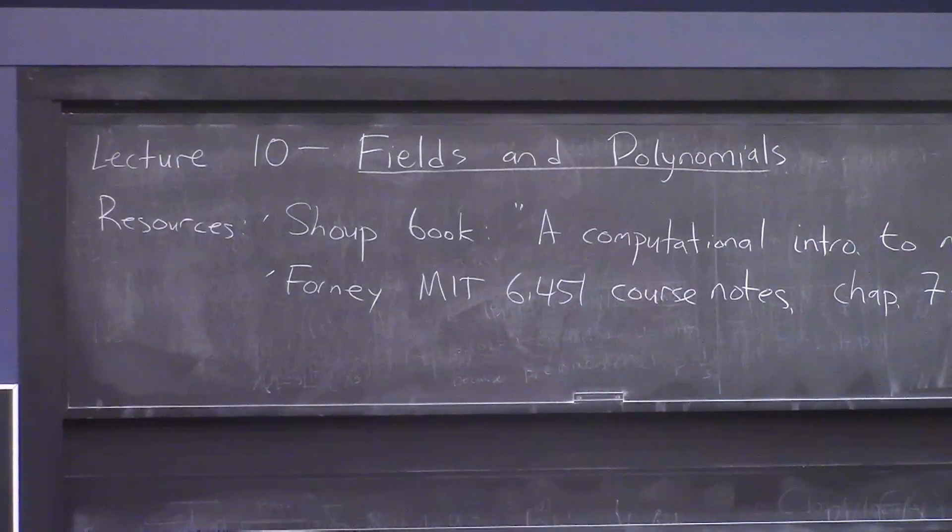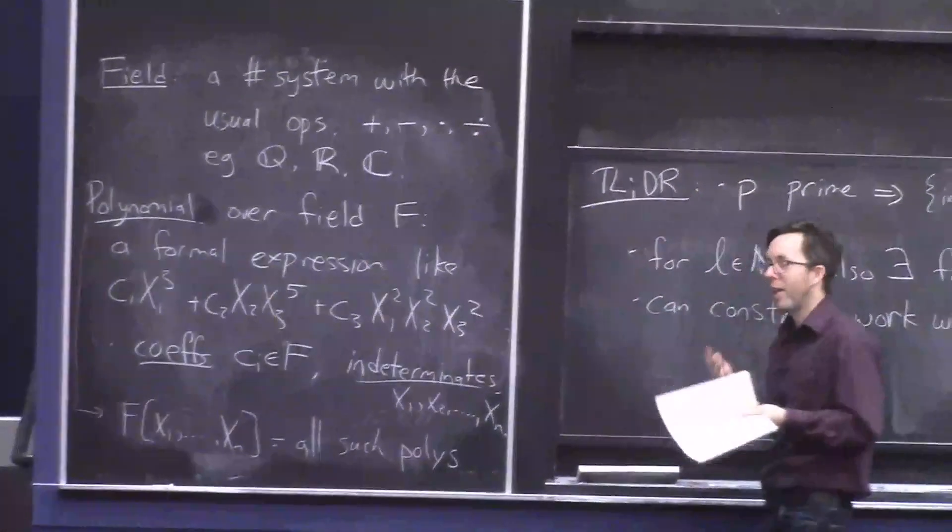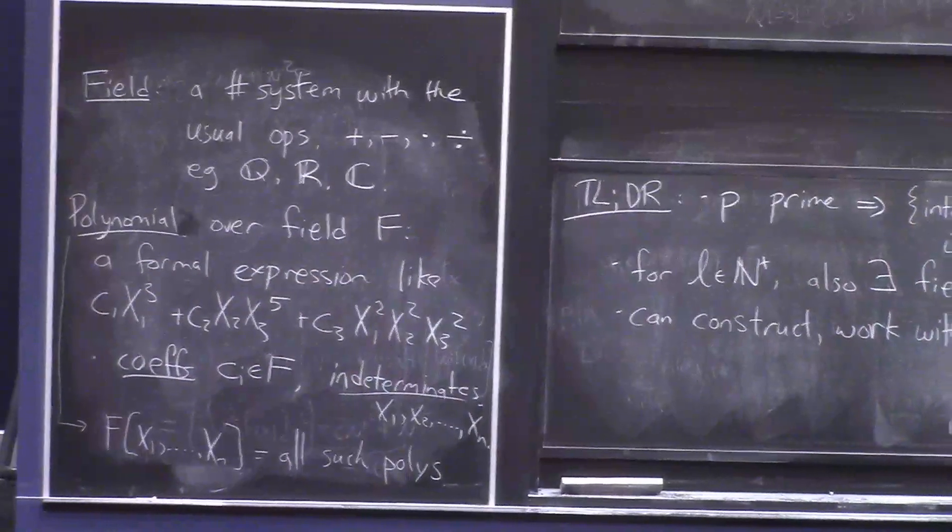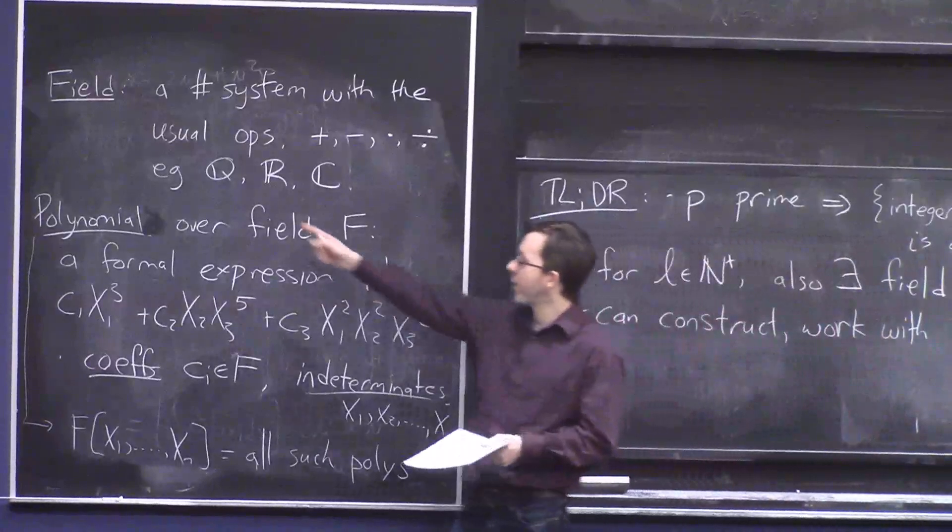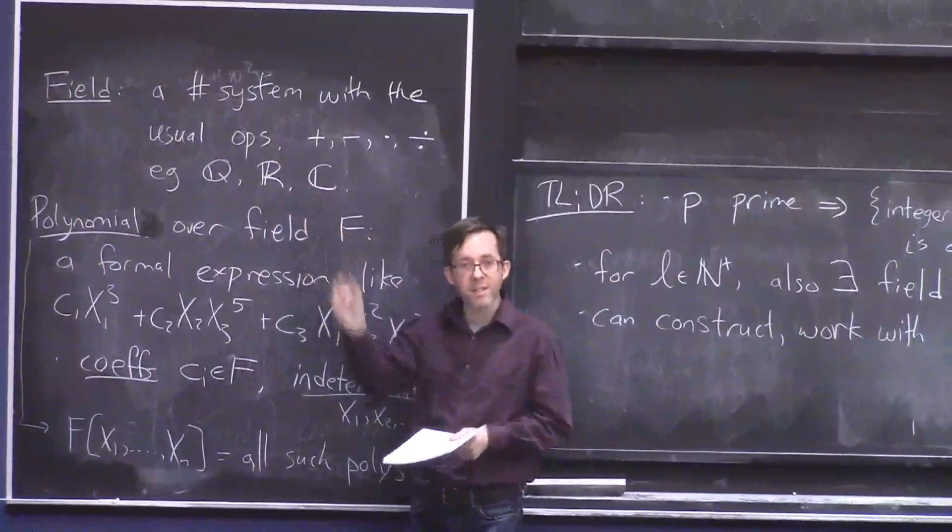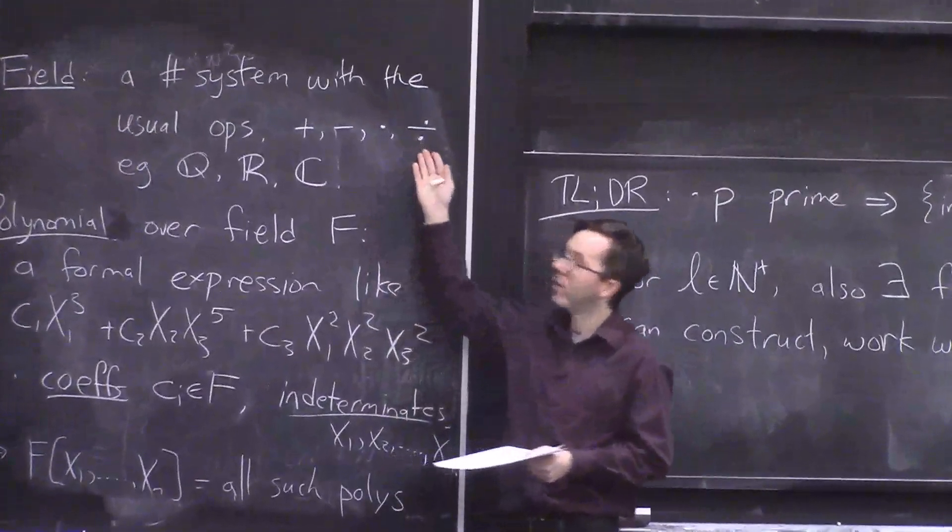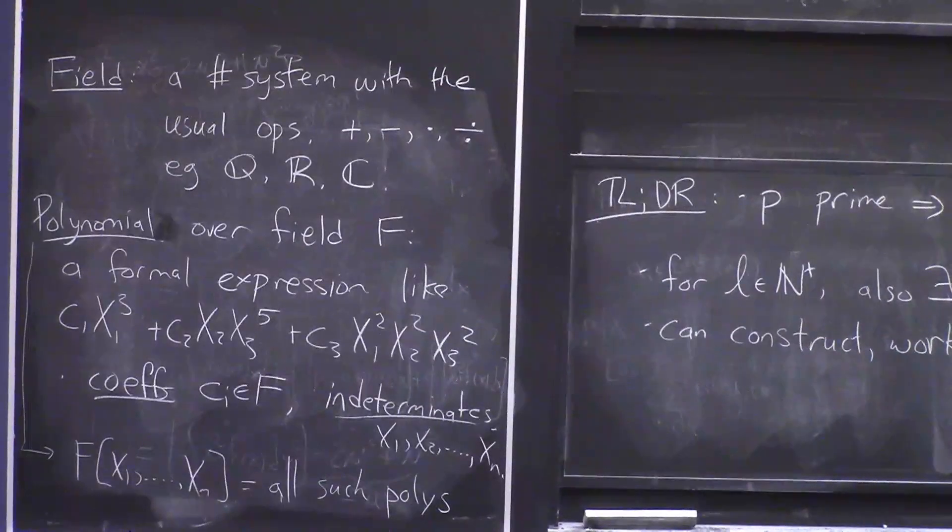I put some things up on the board already. So in case you don't know, a field is like a system of numbers where you have the usual arithmetic operations: addition, subtraction, multiplication, and division by non-zero. Some popular examples are the rationals and the reals and the complexes, but not the integers because they don't have division. But there are also some fields that have only finitely many elements, and that's what we'll be mainly talking about today.